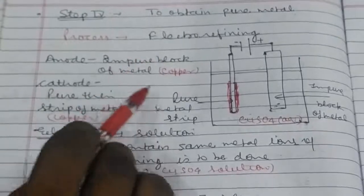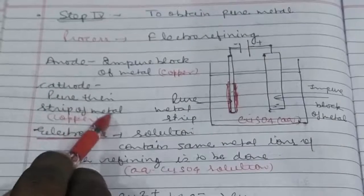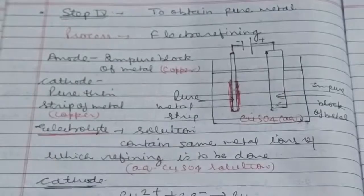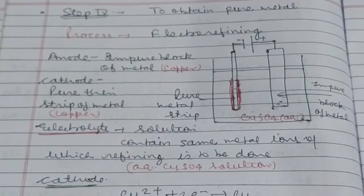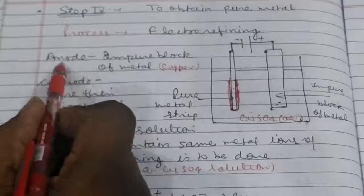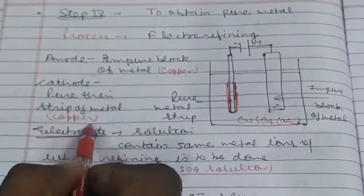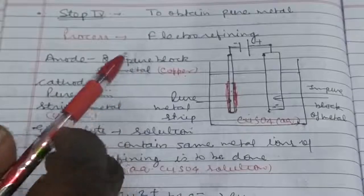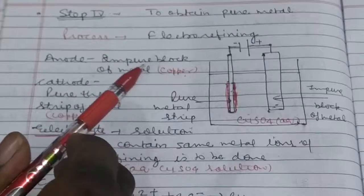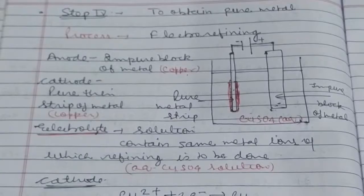Suppose I have to refine copper. Then you will be given a pure thin strip of copper and an impure block of copper. If you have studied in the chapter electrolysis, how electro-refining is done. There are two electrodes: anode and cathode. At anode, you will put impure block of metal, which is copper. At cathode, pure thin strip of copper. During refining, it should be remembered that pure strip of metal should be at cathode, so that metallic cation can easily deposit it to pure metal, not impure.